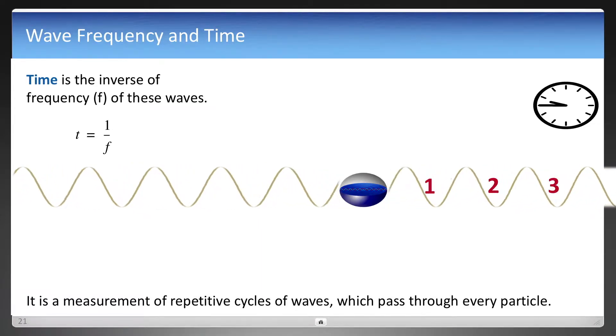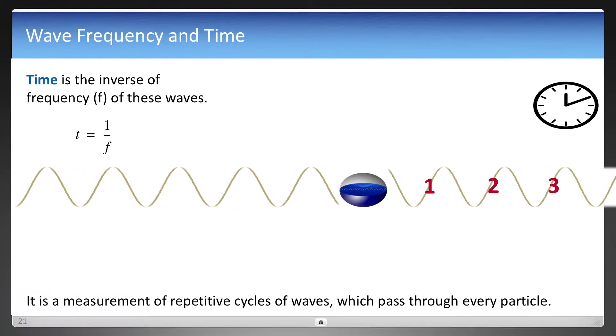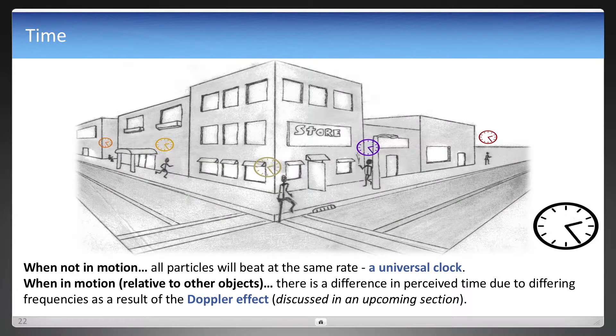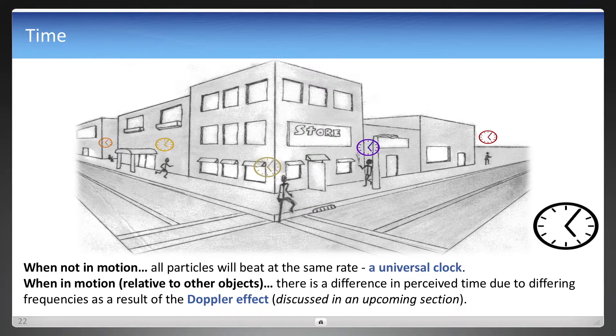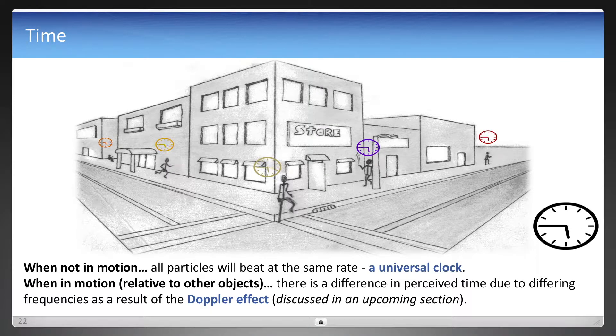Now, because this would be flowing through every particle, that means that everything from the cesium atom that measures our clocks to pendulum, like in a grandfather clock, for example, everything should be beating at the same rate when not in motion.